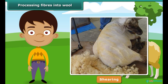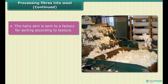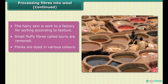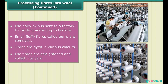The sheared skin with hair is then washed thoroughly in tanks to remove grease, dust, and dirt. This process is called scouring. The washed hairy skin is sent to a factory where hairs of different textures are separated or sorted. Small fluffy fibers called burrs are picked out from the hair. The fibers are dyed in various colors, as the natural fleece of sheep and goats is black, brown, or white. The fibers are then straightened and rolled into yarn.